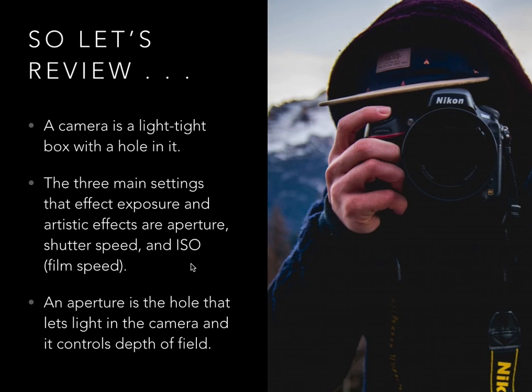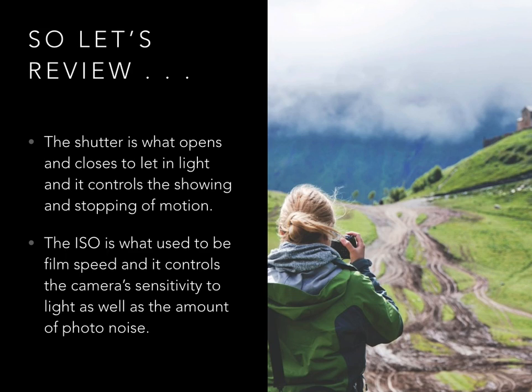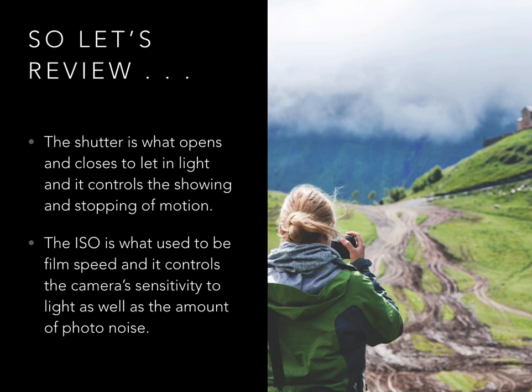Let's review. A camera is a light-tight box with a hole in it. The three main settings that affect exposure and artistic effects are aperture, shutter speed, and ISO, which is also referred to as film speed. Aperture is the hole that lets light into the camera and controls depth of field. The shutter is what opens and closes to let light in and controls the showing and stopping of motion. ISO is what used to be film speed and controls the camera's sensitivity to light as well as the amount of photo noise. Finally, don't forget you are the most important part of the photography puzzle — learn all the ways to control your specific camera and practice, practice, practice.